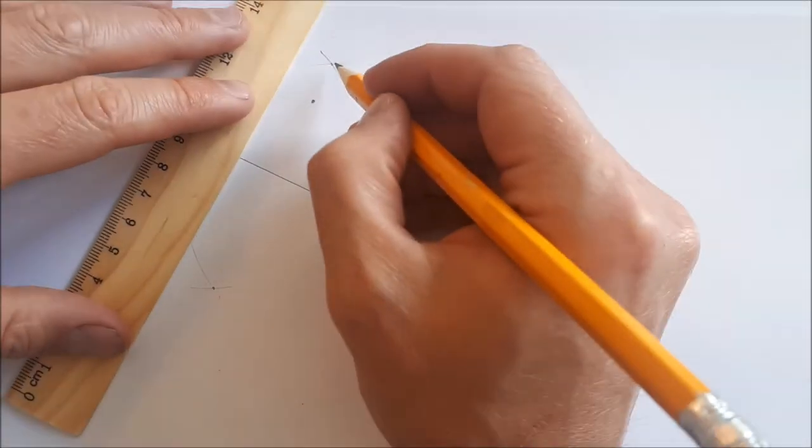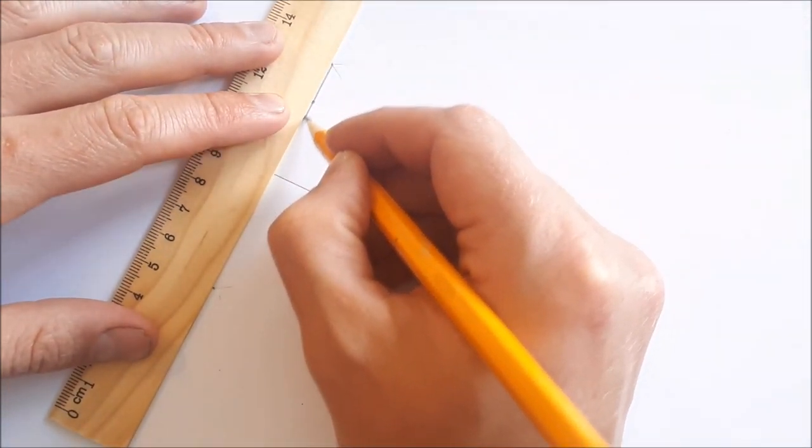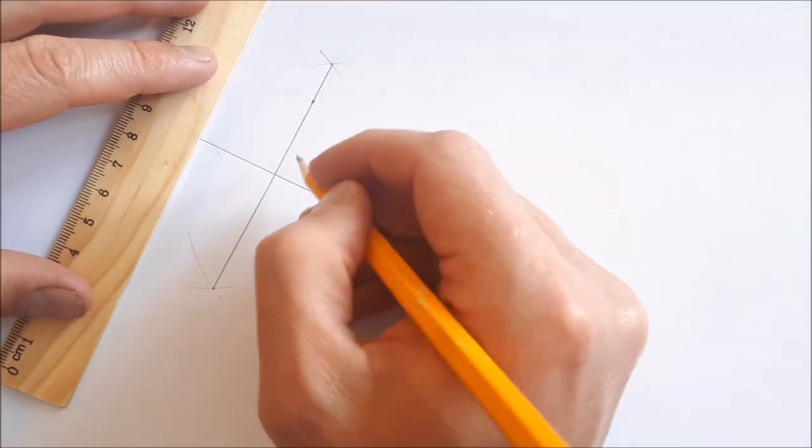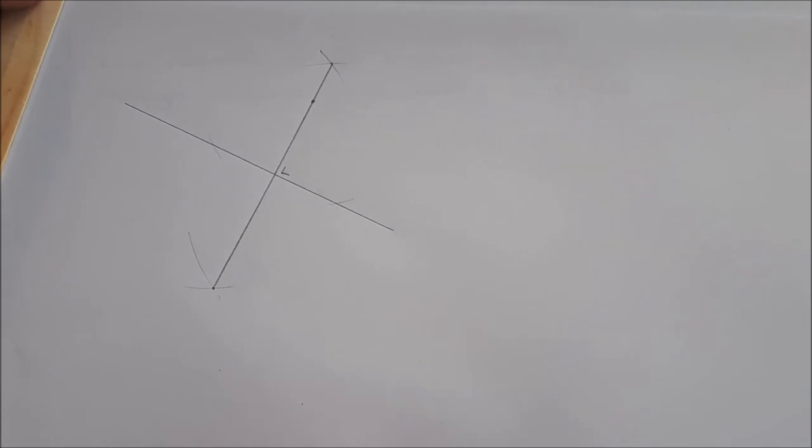I join these two points of intersection, and the line that you join them with should go through the original point and the line is perpendicular to the original line. If you have any questions, just ask in the comments below. Thanks for watching and I'll see you in the next video.